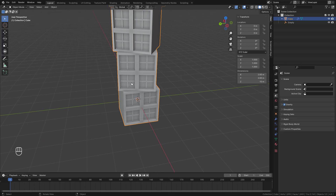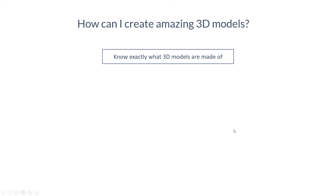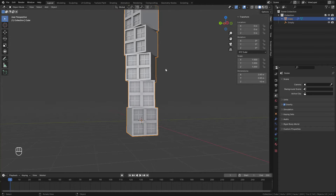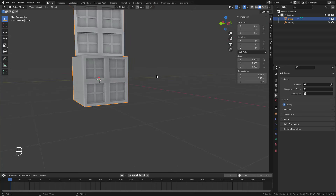To do all of this, you need to know the tools. Going back to what you need to know: we've explored what 3D models are made of — mesh and materials. The next thing that makes you a great professional 3D modeler is good knowledge of tools, which is actually what takes the most time to learn. And then the last thing is experience — time spent using those tools and exploring new ones to make new models. Now let me create this scene from scratch; it won't take long.